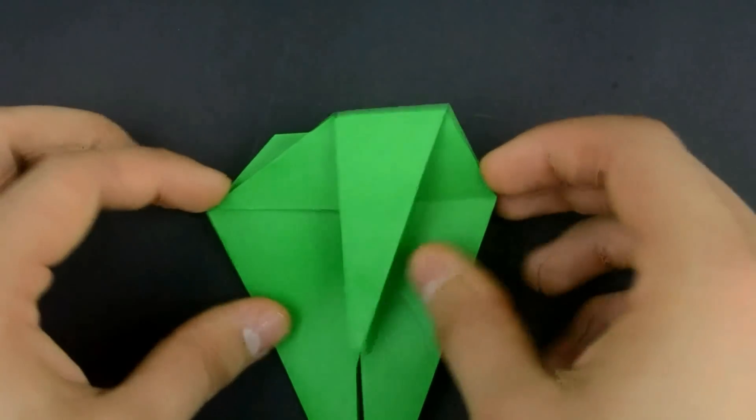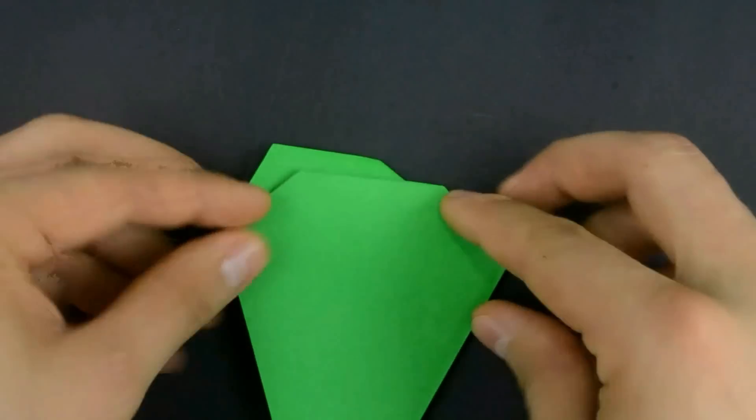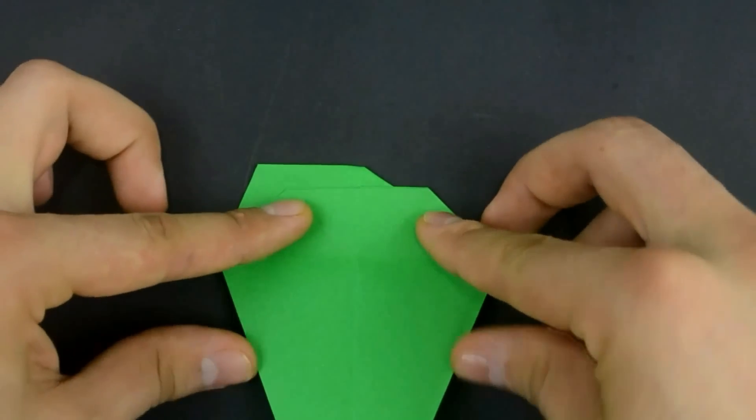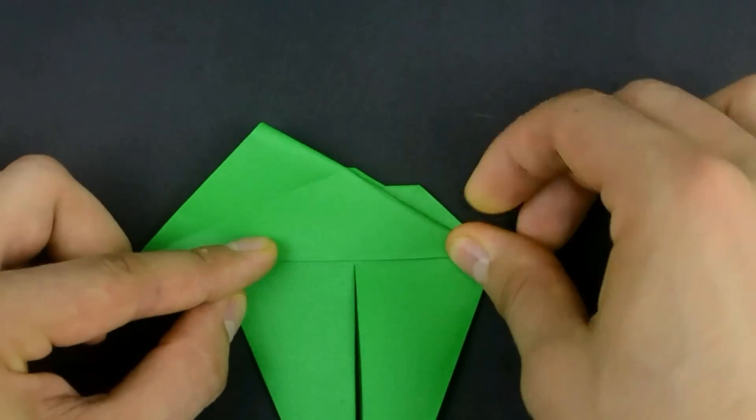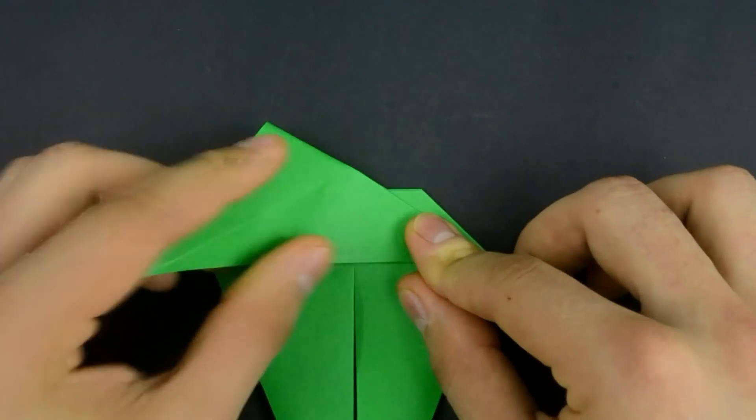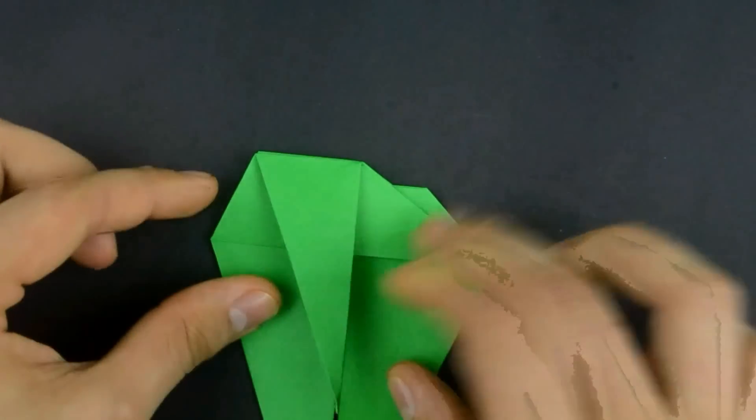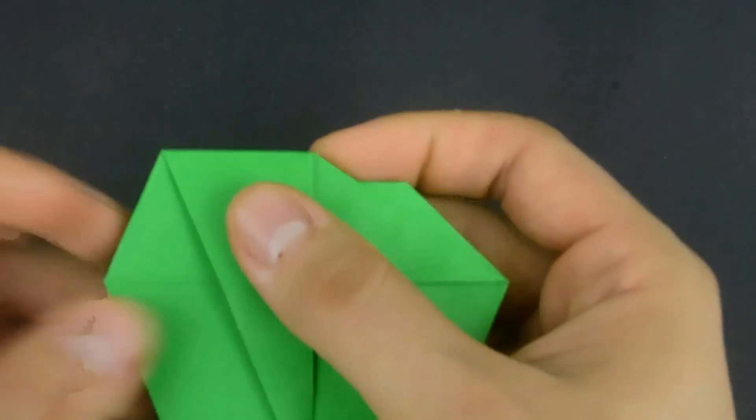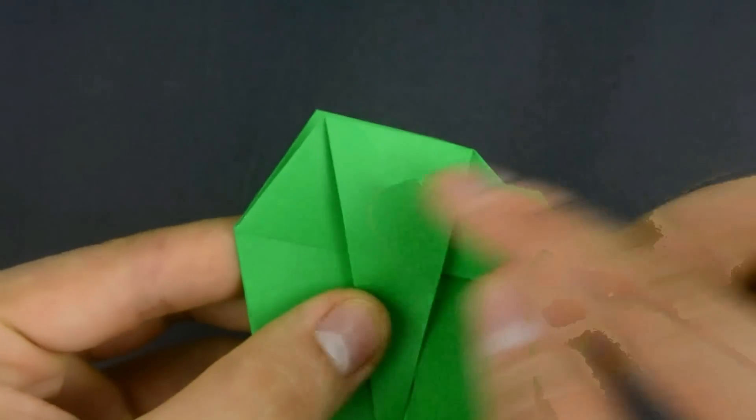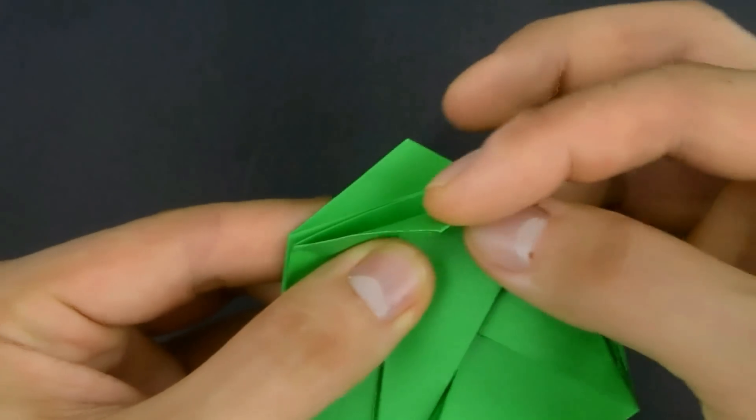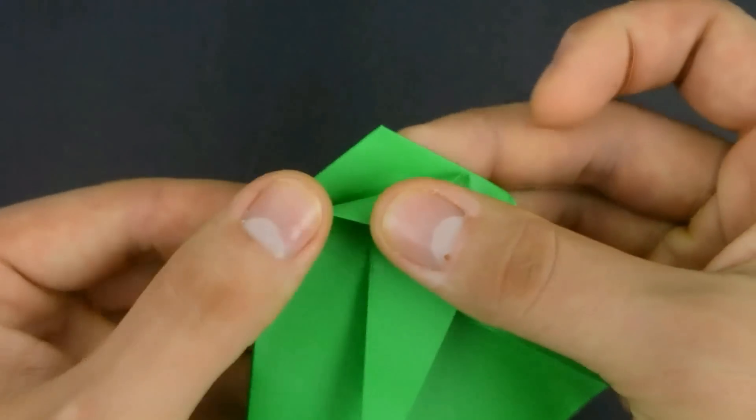Just repeat the same step on the other side. To fold the corners there or left, just make a diagonal using the back layer as a reference. That way.